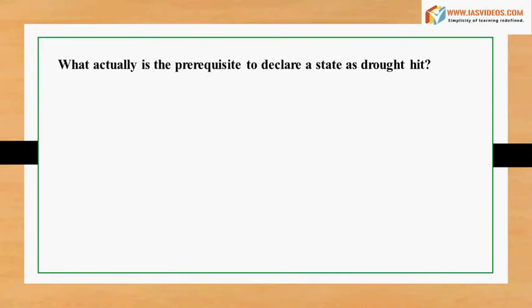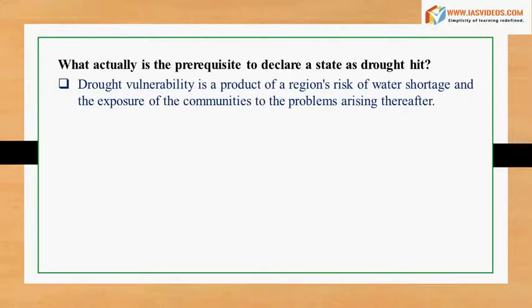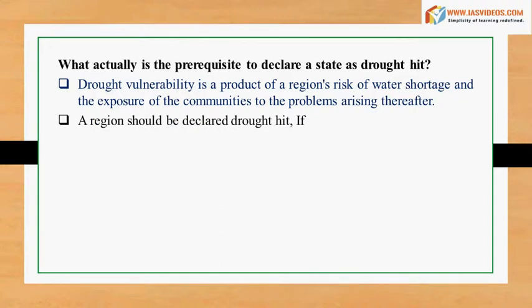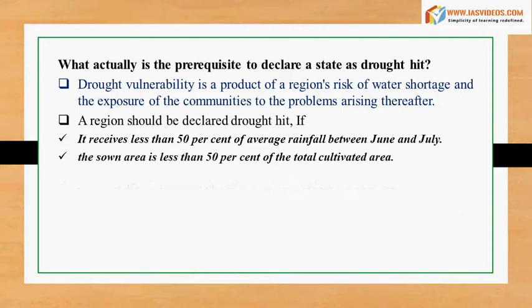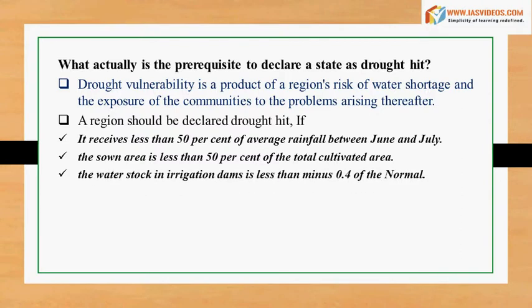What actually is the prerequisite to declare a state as drought hit? Drought vulnerability is a product of a region's risk of water shortage and the exposure of the communities to the problems arising thereafter. A region should be declared drought hit if it receives less than 50% of average rainfall between June and July, the sown area is less than 50% of the total cultivated area, or the water stock in irrigation dams is less than minus 0.4 of the normal.